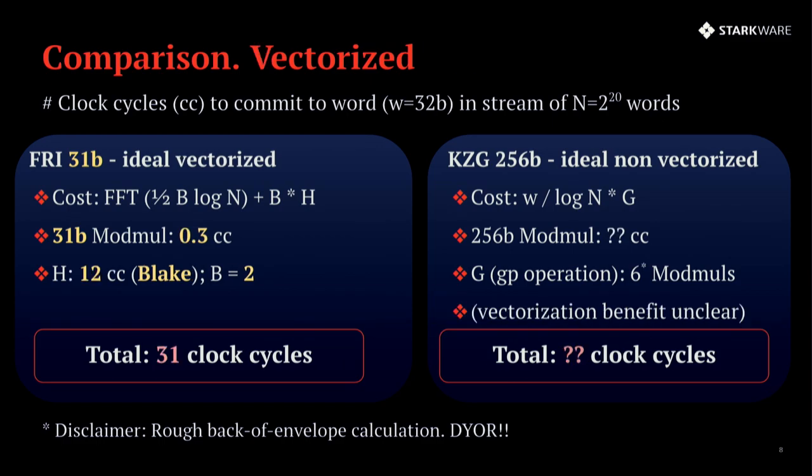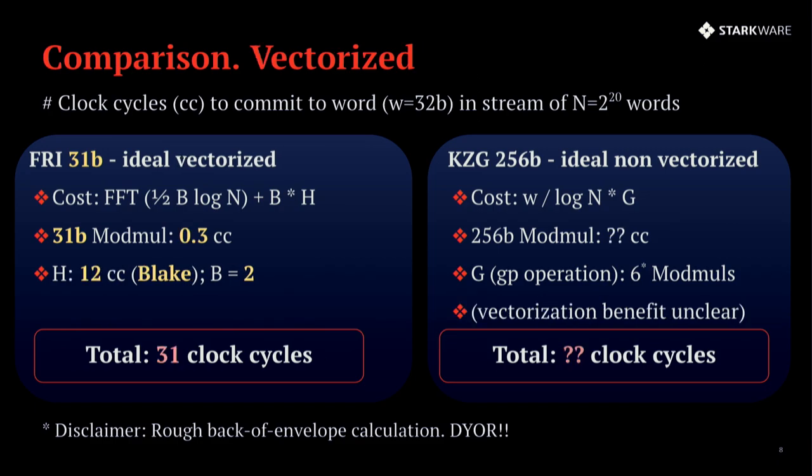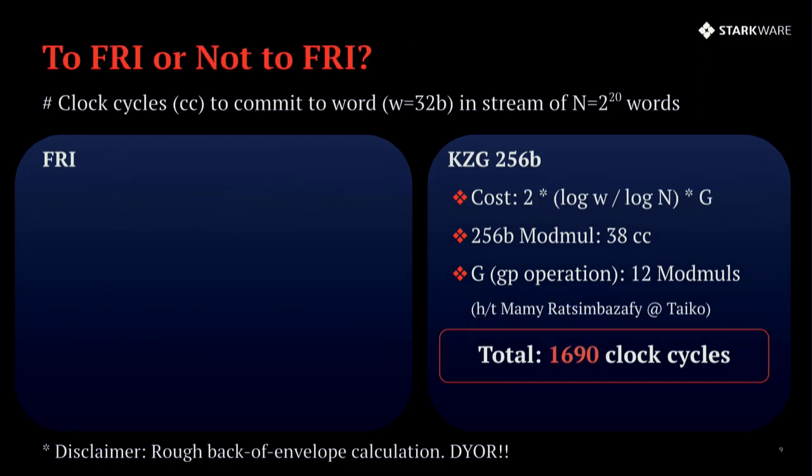However, if you move to vectorized instruction sets, which are today common in all CPUs, then the picture changes pretty drastically because KZG probably doesn't vectorize all that well, whereas something like a 31 bit field FRI with an FFT does vectorize extremely well. And then you get that each modular multiplication on the small field is one third of a clock cycle amortized. So you get a total of 31 clock cycles versus something that is probably going to be around 10 times greater than that. So you have like 10 times greater efficiency, but the story doesn't end there.